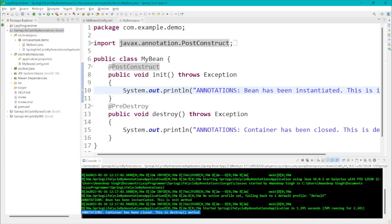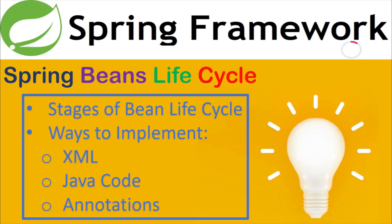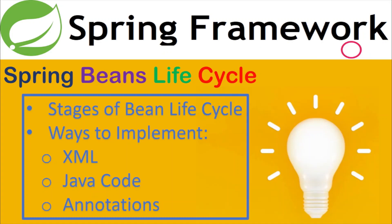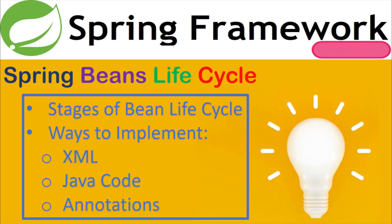Using all three methods I have demonstrated how we can control the lifecycle of a bean and inject any business logic or code during a particular stage of the bean. To summarize, we covered the different stages of a Spring bean's life inside the Spring IOC container. We also saw how to manage the lifecycle using three different methods: first using XML, then through Java code by implementing InitializingBean and DisposableBean interfaces, and third using annotations. Personally, I would prefer the annotations way because that makes your code look cleaner and more concise.